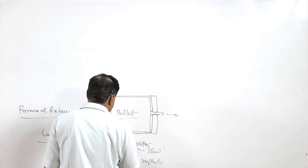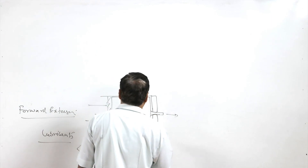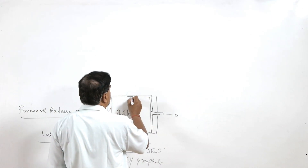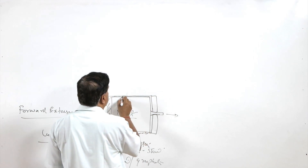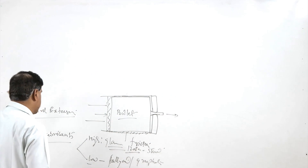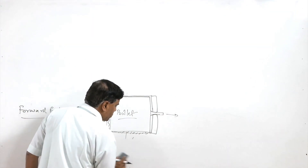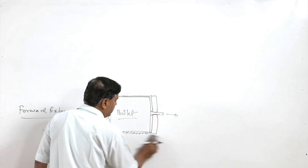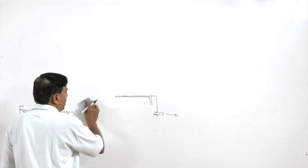Since the glass melts under high temperature conditions, it not only provides lubrication but also acts as an insulator — so heat losses from the hot billet to the cylindrical wall are reduced while facilitating the movement of the billet within the container.